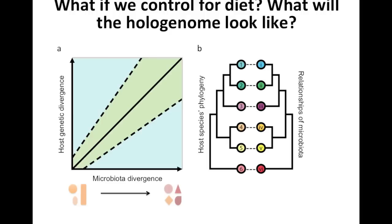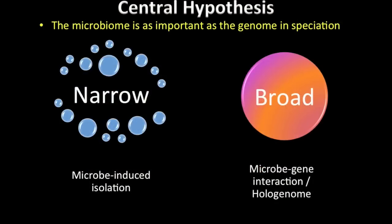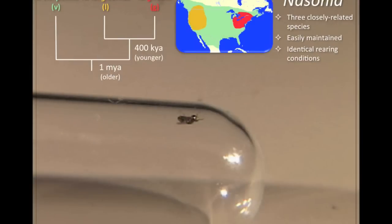This is not your standard co-speciation symbiont gene phylogeny analysis. What we're asking is whether communities are more related between two host species than between others — it's a community relationship. Along the microbial divergence axis, it's not changes in gene sequences per se, but changes in the types and abundance of microbes — a kind of community cluster analysis. In the microbiome field we call these UniFrac trees. We think of this field in terms of two types of models: a narrow sense, where microbes drive reproductive isolation completely on their own, and a broad sense, where microbes interact with the genome.